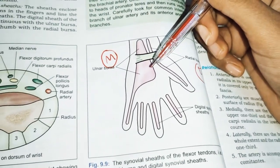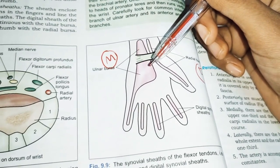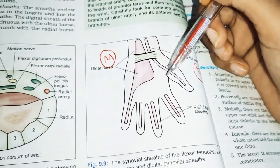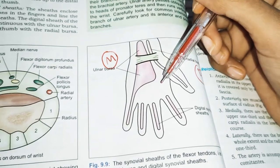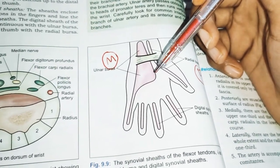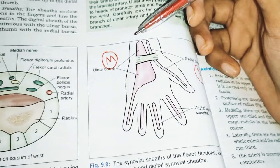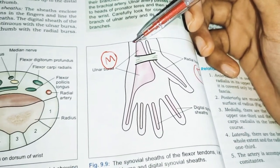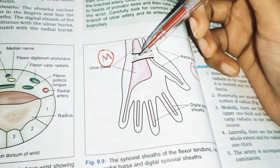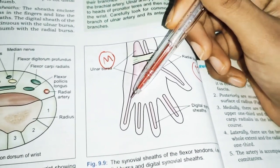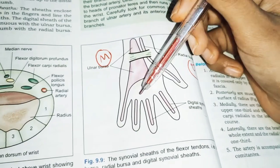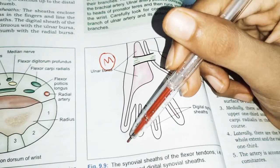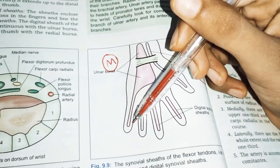The synovial sheath extends from 5 to 7.5 centimeters into the forearm and downwards into the palm up to the middle of the shaft of the metacarpal bones. It is important to know that the lower medial end is continuous with the digital synovial sheath of the little finger, but all other digital sheaths are separate.